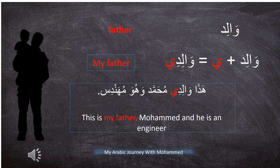والد means 'father.' With ياء المتكلم, والد becomes والدي, meaning 'my father.' For example: هذا والدي محمد وهو مهندس — this is my father Muhammad and he is an engineer. Because والدي is masculine, we use the demonstrative هذا.